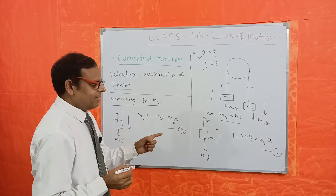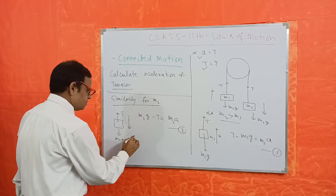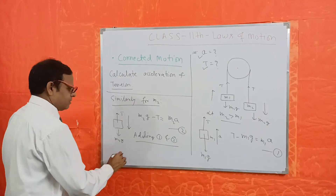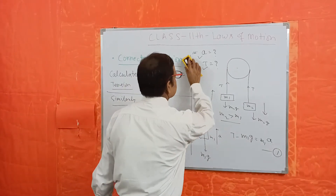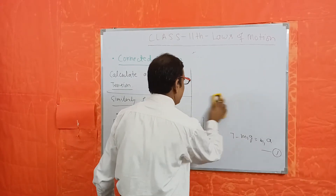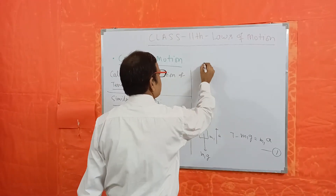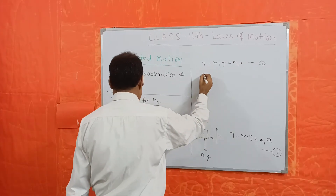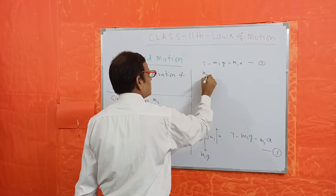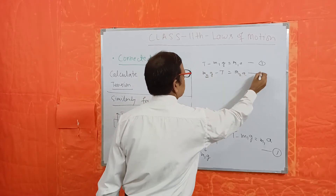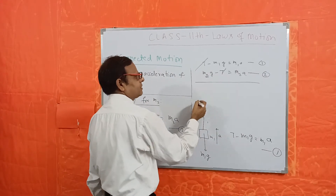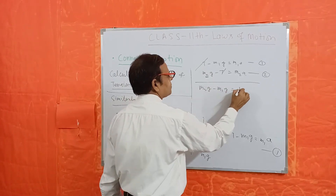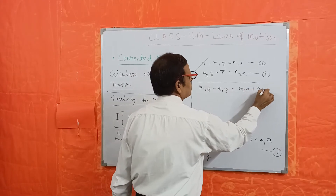To find T and A, we add equations 1 and 2. Adding them: T minus M1g equals M1A, and M2g minus T equals M2A. When we add, T and minus T cancel out, giving M2g minus M1g equals M1A plus M2A.